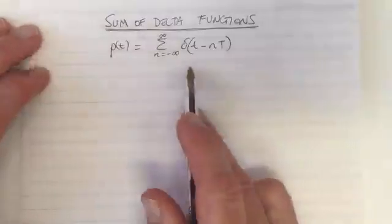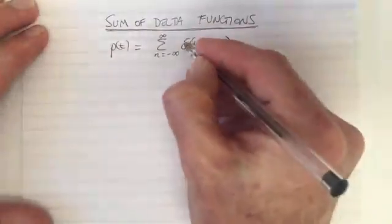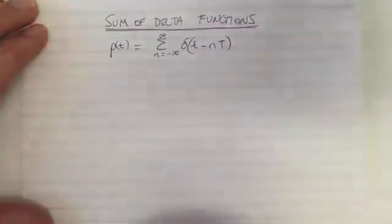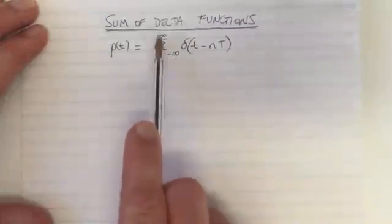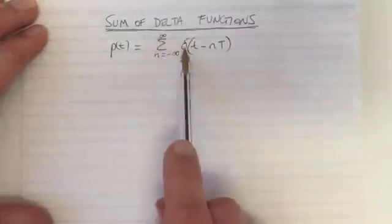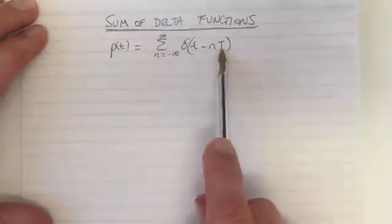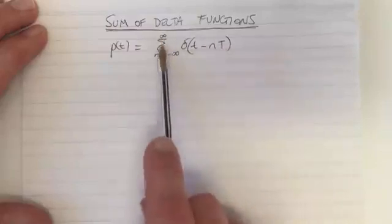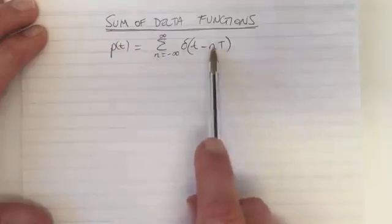We're going to plot the sum of some delta functions. This summation is very common and used in sampling. It is the summation from n equals minus infinity to infinity of delta functions offset from zero by n times capital T. Every element of this sum has a different offset because n has different values in this sum.